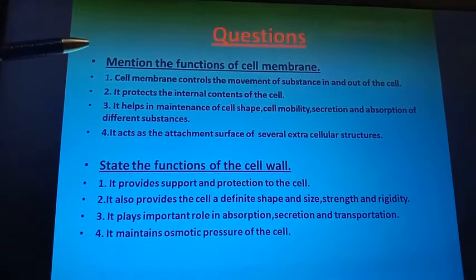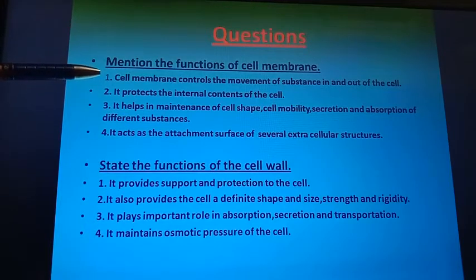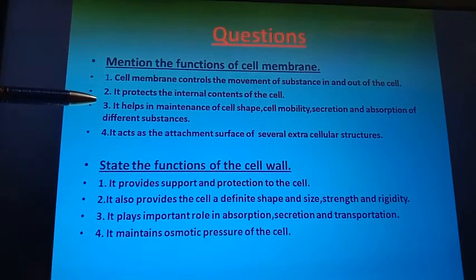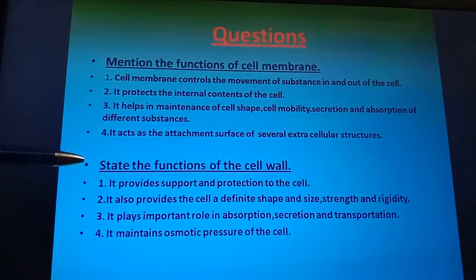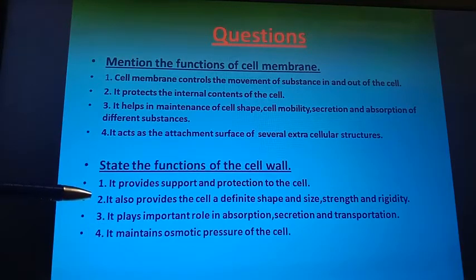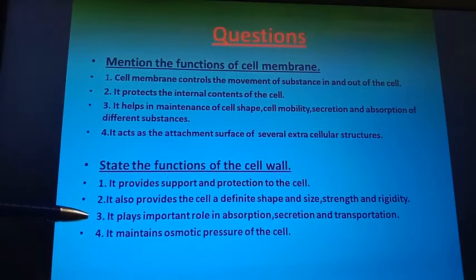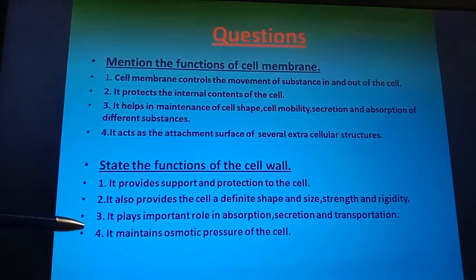Next are the functions of the cell membrane and the cell wall. Functions of the cell membrane: it controls the movement of substances in and out of the cell; it protects the internal contents of the cell; it helps in maintenance of cell shape, cell mobility, secretion, and absorption of different substances; and it acts as an attachment surface for extracellular structures like the cell wall. Functions of the cell wall: it provides support and protection to the cell; it gives the cell a definite shape, size, strength, and rigidity; it plays an important role in absorption, secretion, and transportation; and it maintains the osmotic pressure of the cell.